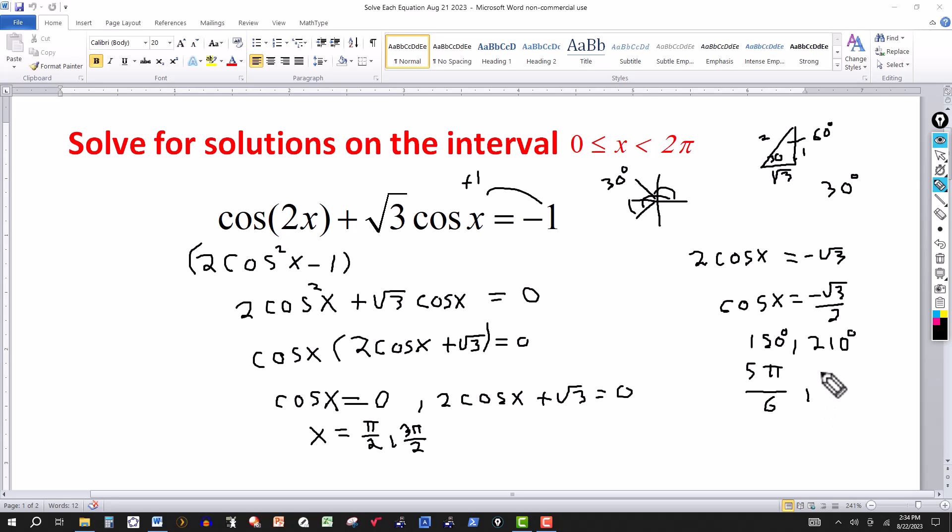So a little correction here. Make this 5 pi over 6 for 150 degrees. And then 210, if you multiply that by pi over 180 and simplify, it's 7 pi over 6.